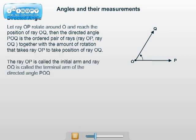The ray OP, that is the first ray in the ordered pair, is called the initial arm and the ray OQ is called the terminal arm of the directed angle POQ.